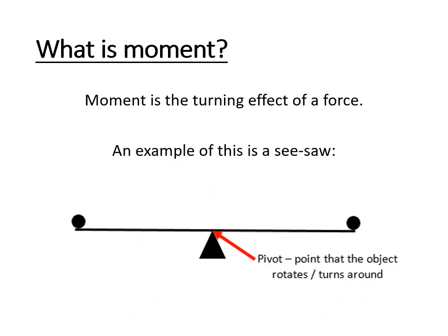What is a moment? A moment is the turning effect of a force. A really good example of this is a seesaw. Imagine you've got a person sat on each side — if they weren't the same mass, one side of the seesaw would go down and one side would go up. That is the turning effect of the force. Once someone with a mass is sat on the seesaw, gravity acts upon that mass, giving it a weight. That weight is the force that causes the turning effect of the seesaw.